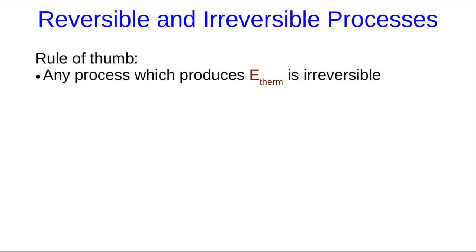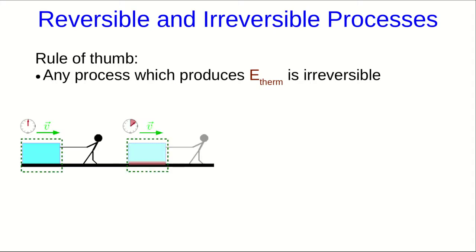Any process which produces thermal energy is irreversible. So for example, when you pull something across a floor, you're generating thermal energy because of kinetic friction, and so this has to be irreversible.